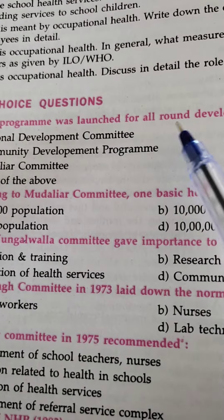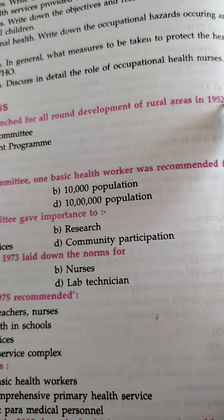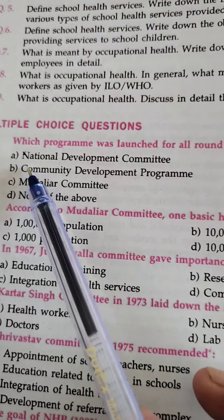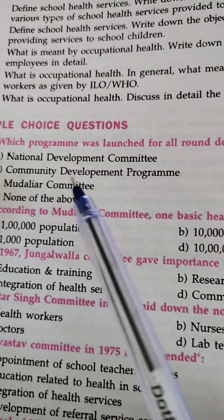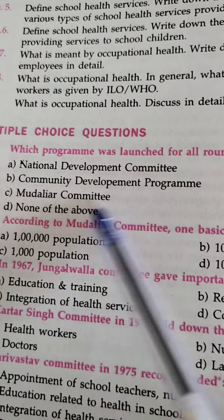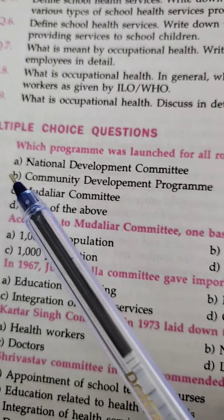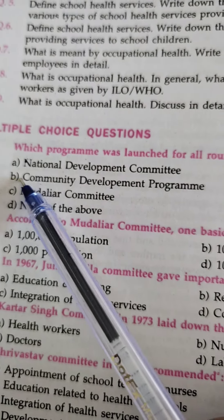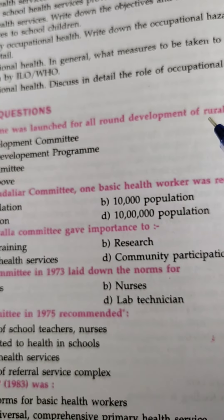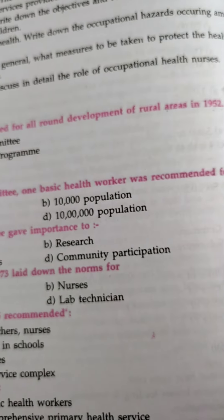This program was launched for all-around development of rural areas in 1952. Options: 1st National Development Committee, 2nd Community Development Program, 3rd Mudaliar Committee, 4th None of the above. The answer is: Community Development Program was launched for all-around development of rural areas in 1952.